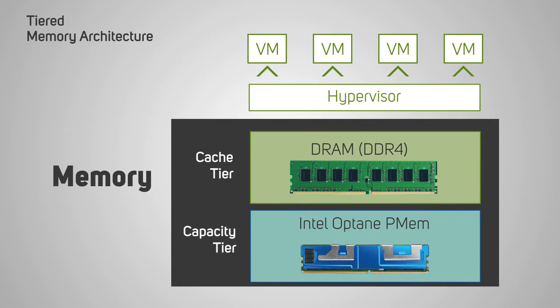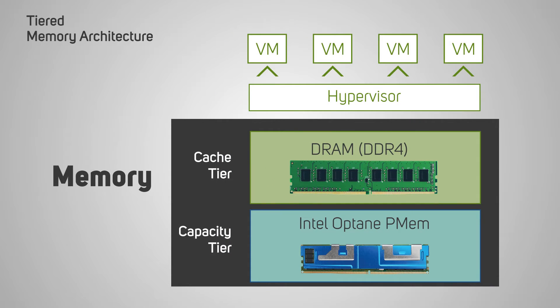The idea is that rather than having a single memory pool of DRAM, you create a tiered memory scenario with DRAM acting as a fast caching layer and PMEM providing the additional capacity layer. This allows DRAM to provide absolute performance when needed, but facilitates the system scaling way above the memory capacity that DRAM can offer alone. The typical ratio of DRAM to PMEM should be one to four.